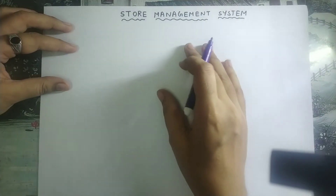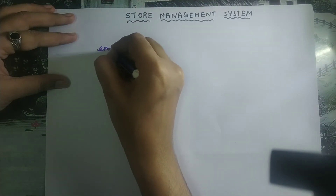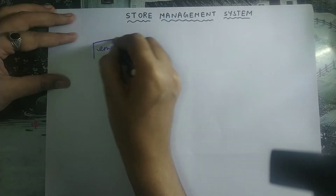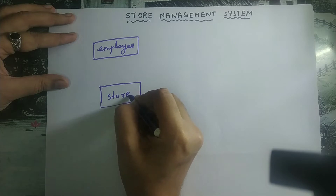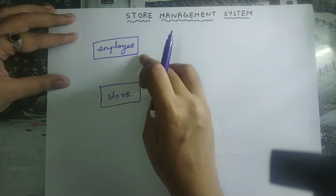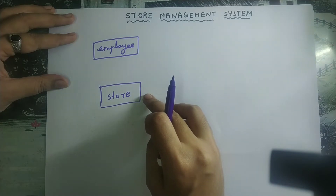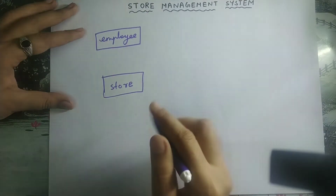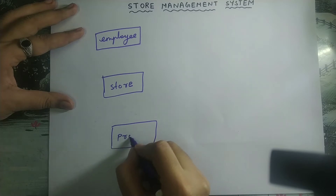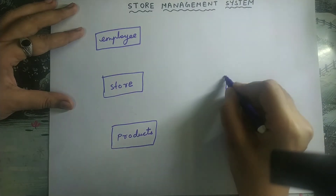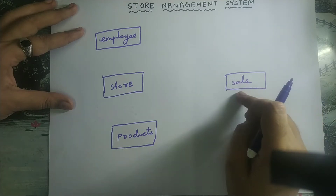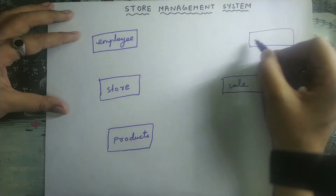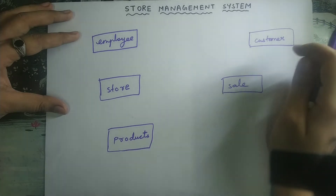The first entity is employee — entities must be written inside a rectangular box. Next entity is store. Employee is physically existing because employee is a person, so employee is an entity. Store is also physically present because it is a building, so store is also an entity. Next, product is also physically present, therefore it is an entity. Next, sale — sale is an entity but it is not physically present, it is conceptually present. Next, customer is physically present because customer is a person, so customer is an entity.